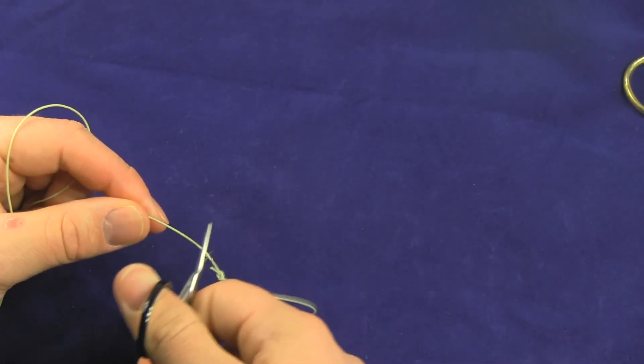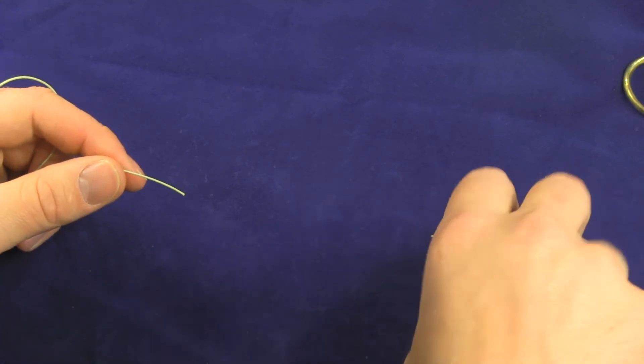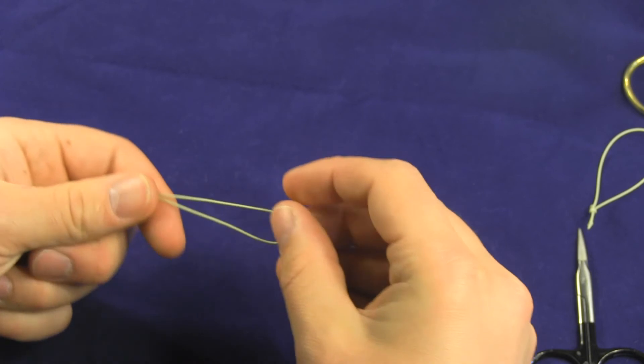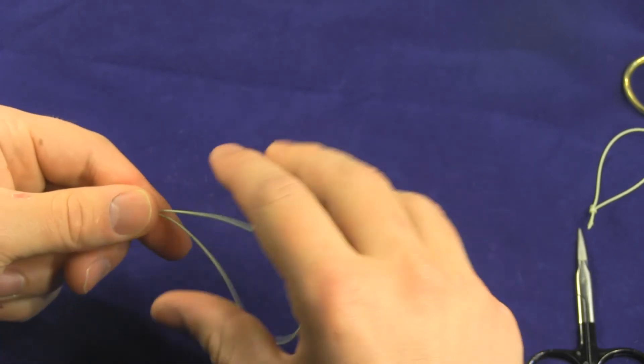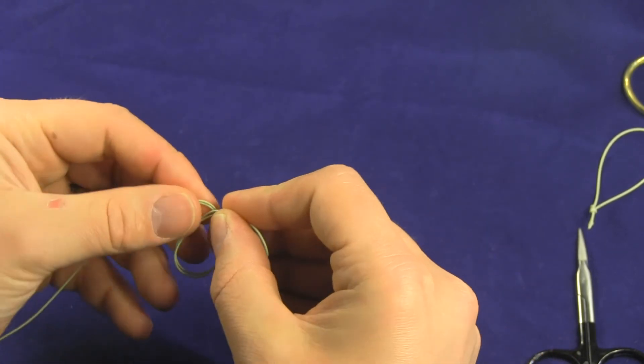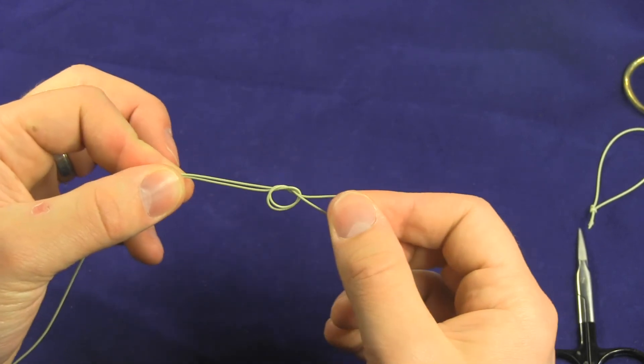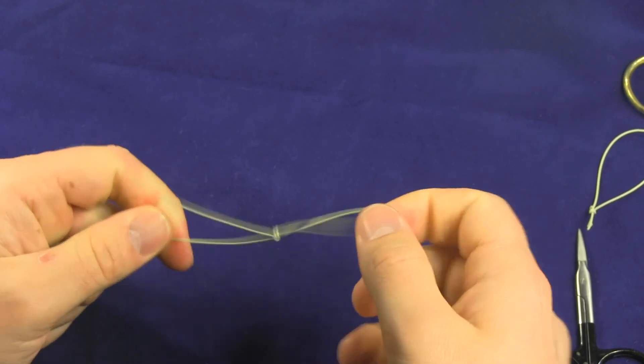So show us again. Take your line, take your tag end, fold it back so you've created yourself a loop. Take that, draw a loop to pass the loop through, bring it out, pull tight, there you go.